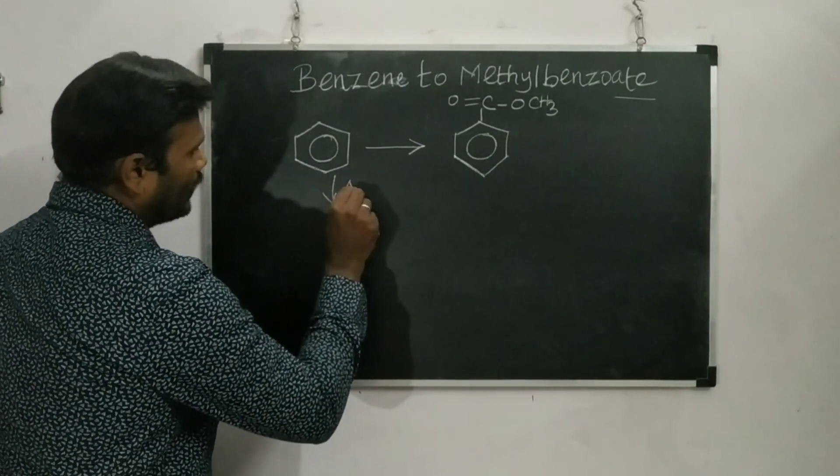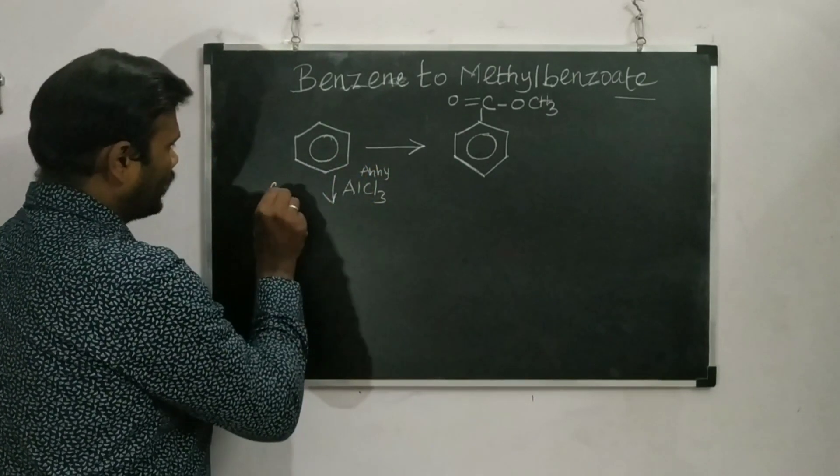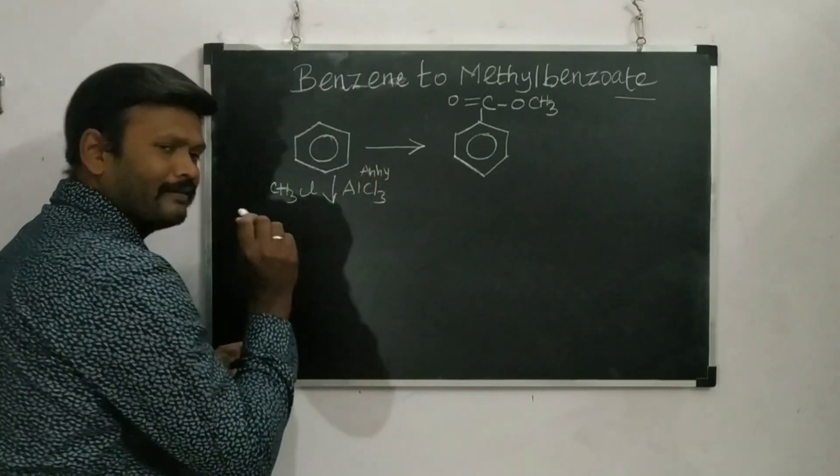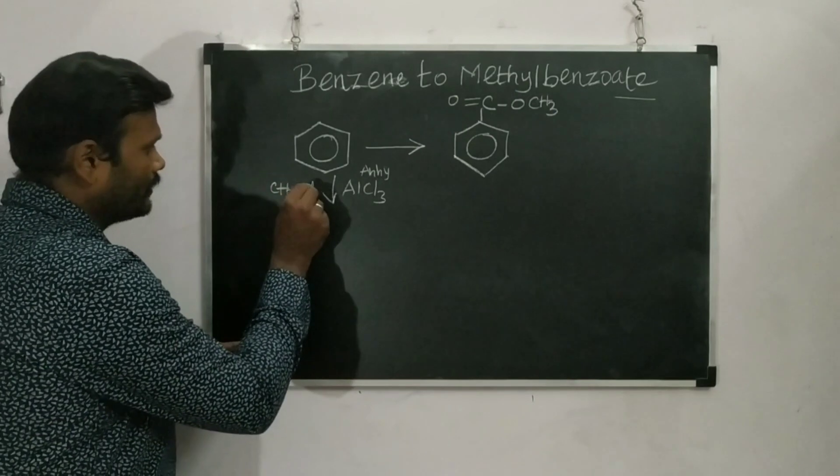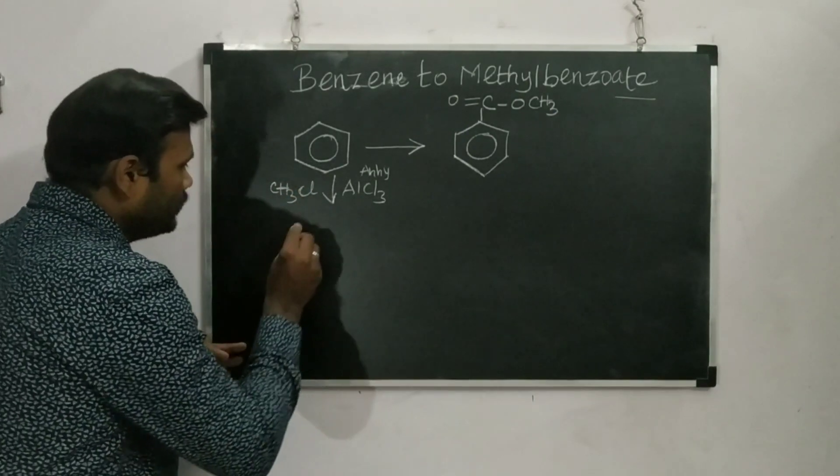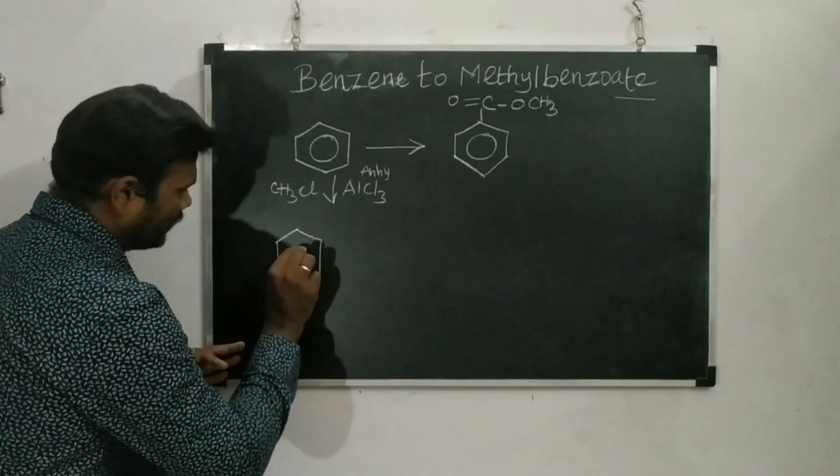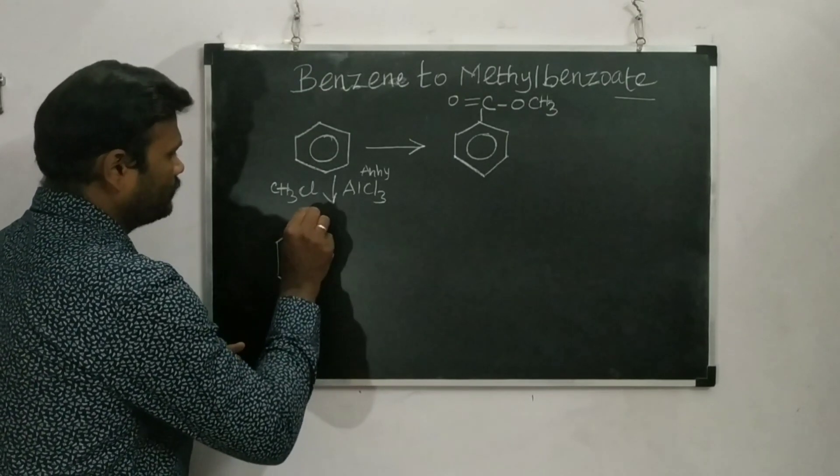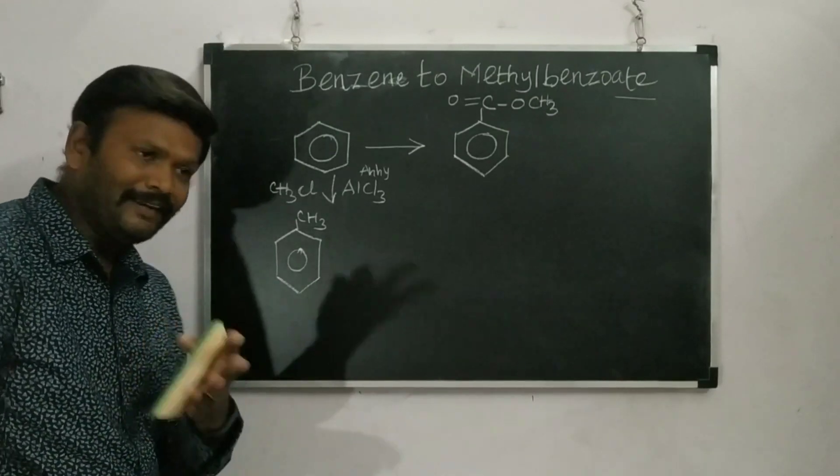In the presence of CH3Cl and anhydrous aluminum chloride AlCl3, this will be acting as a catalyst. This is Friedel-Crafts alkylation. If I conduct the reaction, I will be getting a product like this with CH3 as the product. So I got toluene.